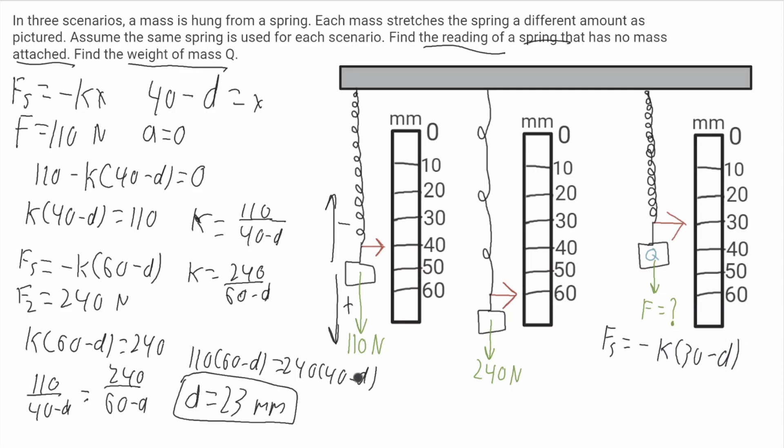Now we have to find k. Well we know that k is equal to 110 over 40 minus d where d is 23. So k will be equal to 110 divided by 17 which is equal to 6.47.